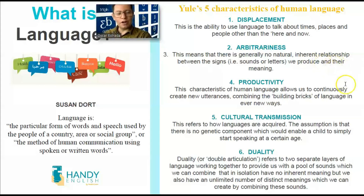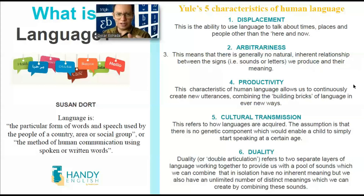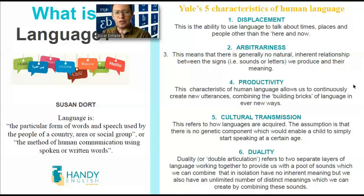Then we have productivity. This is the characteristic of human language that allows us to continuously create new utterances — a spoken sentence. We are able to combine building bricks, meaning lexical sets or words or phrases, in order to create something new. Just like we talked about in the history of English lesson, stating that William Shakespeare created more than 2,000 new idioms and words. That ability has to do with productivity — being able to produce new words and new concepts with the sounds that we have.